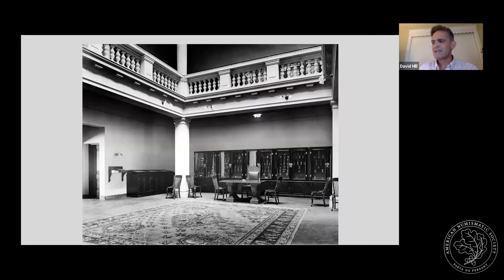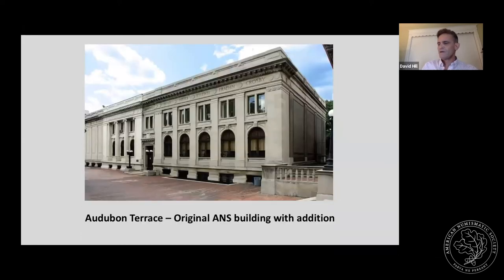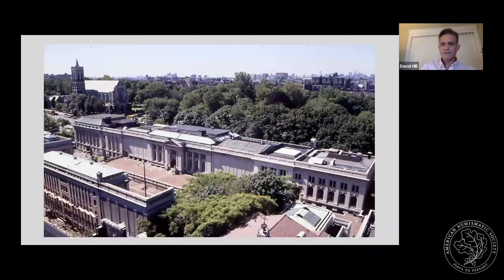With this new building, the ANS finally had a place to mount exhibits, which were often quite successful. They had a big Joan of Arc exhibit in 1913 that supposedly drew 9,000 people to Audubon Terrace. The ANS would eventually start calling itself a museum. The ANS continued to grow, and in 1929 an addition was made to the original building, also paid for by Huntington. The ANS moved out of this building in 2004.